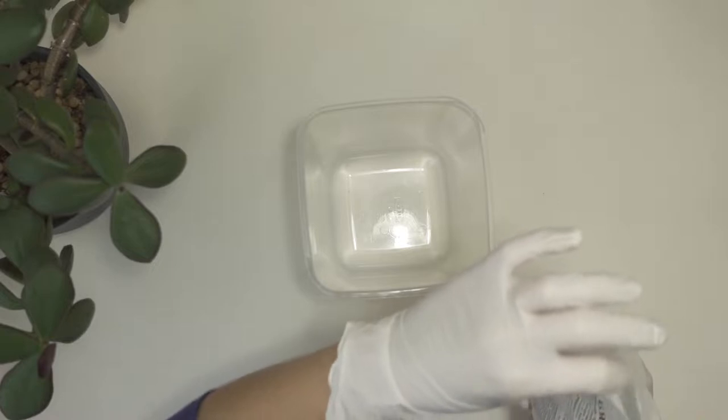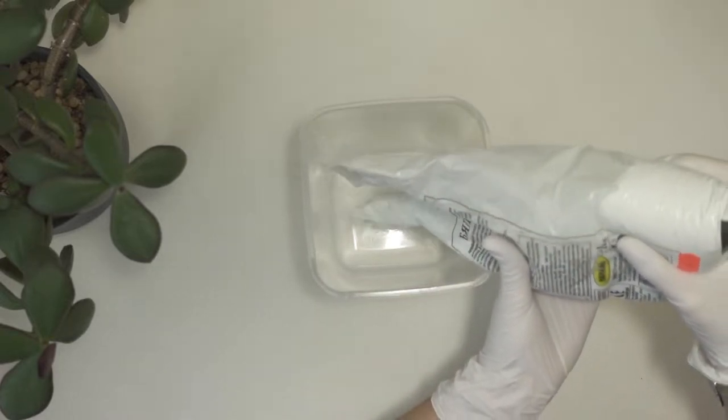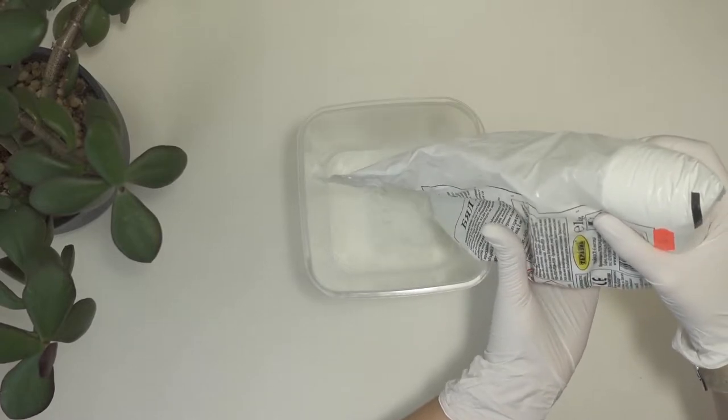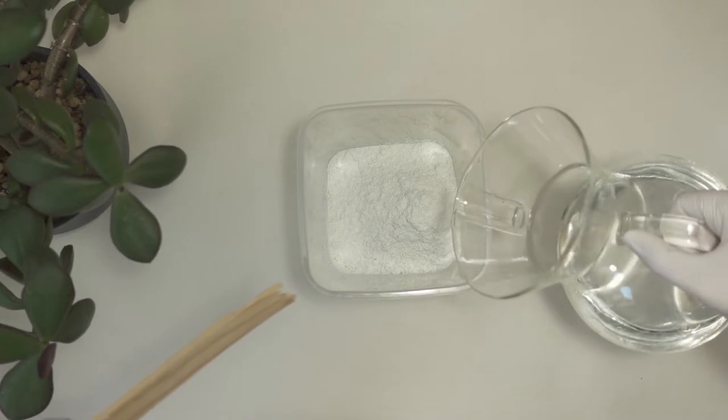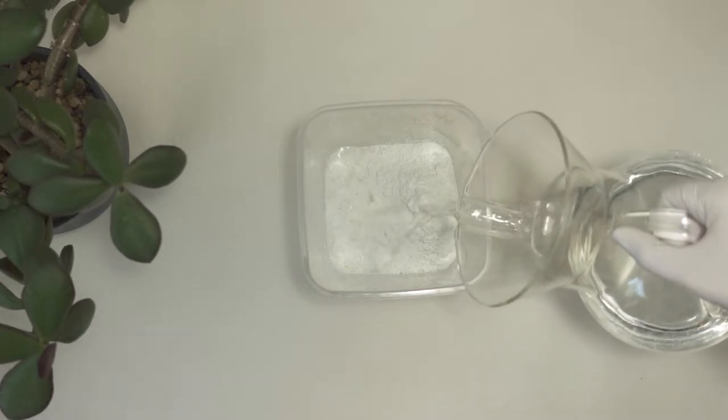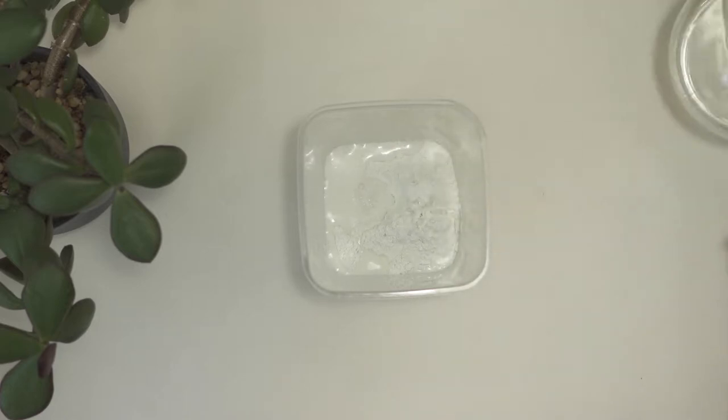For the pencil holder I used white cement, however you can also do this project with concrete as well. I mix the cement by adding water gradually. I didn't use exact measurements, but what you have to achieve is very thick pancake batter.